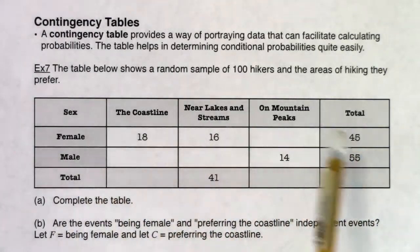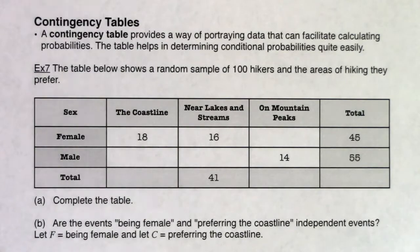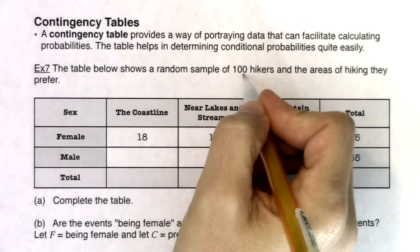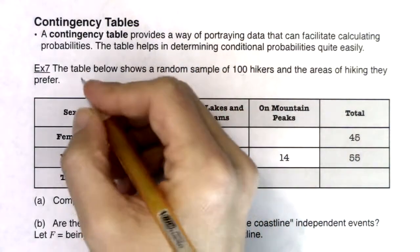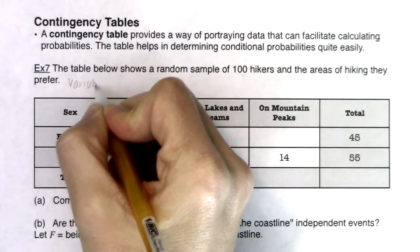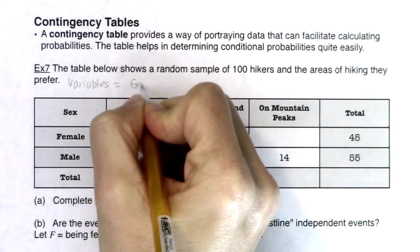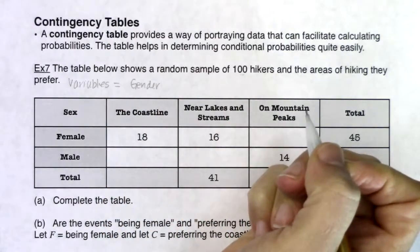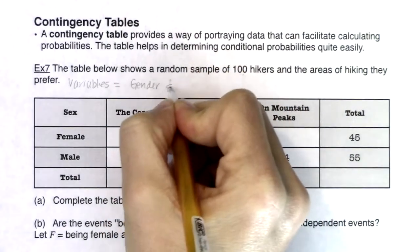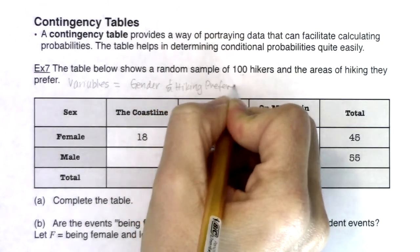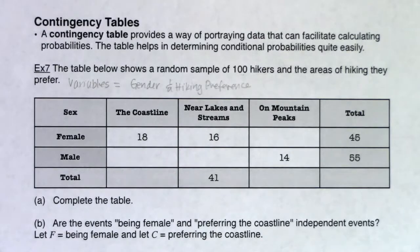I want you to take a look at these numbers — they're whole numbers, frequency counts. In terms of the variables in this problem, imagine you were going to one of these 100 hikers — what are you going to ask them? There are two variables: gender and hiking preference. For each of those 100 hikers, not only am I going to keep track of if they're male or female, I'm going to ask them where they prefer to hike.